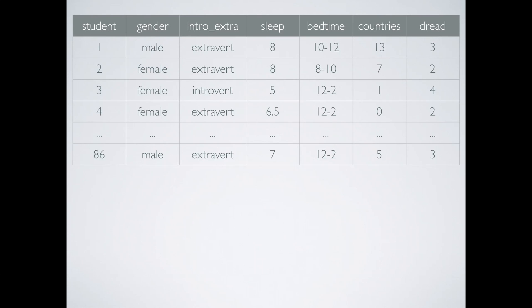The first variable is gender. It has 2 levels with no inherent ordering, hence this variable is just categorical. The second variable, intro-extra, is very similar. It also has 2 levels with no inherent ordering, so it is also called a categorical variable.